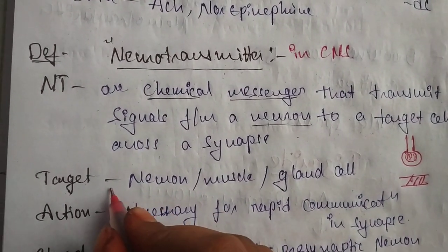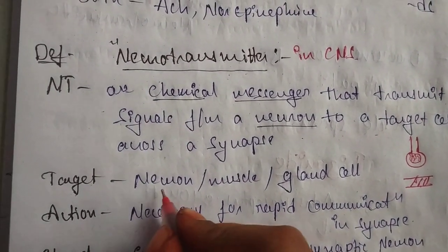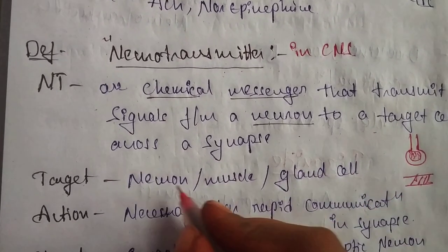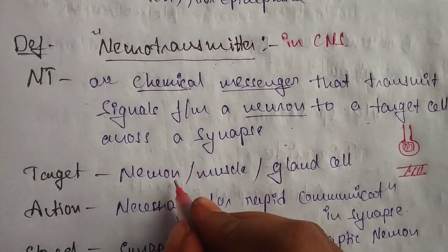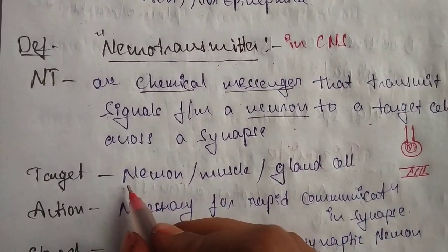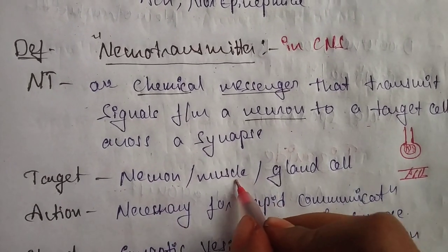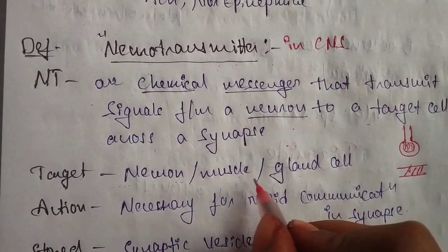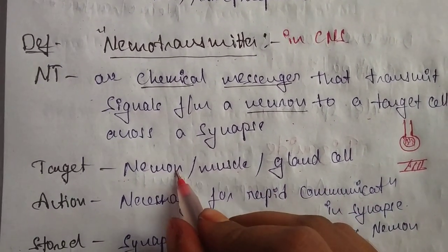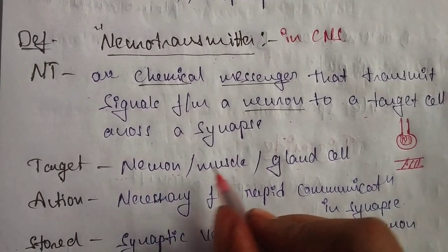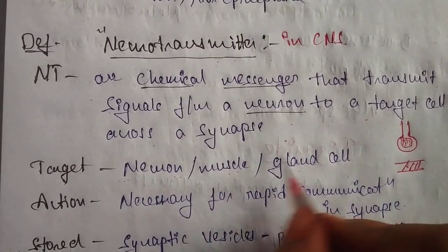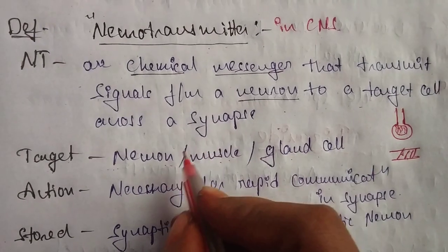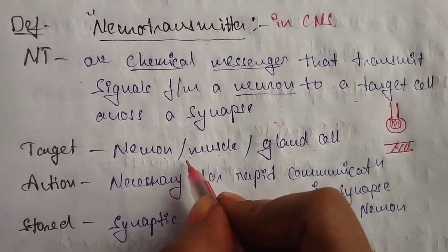The target of action — the site of action means where it shows action. It acts on neurons, muscle cells, and gland cells. The action targets the neuron and also targets muscle or gland cells as target cells.